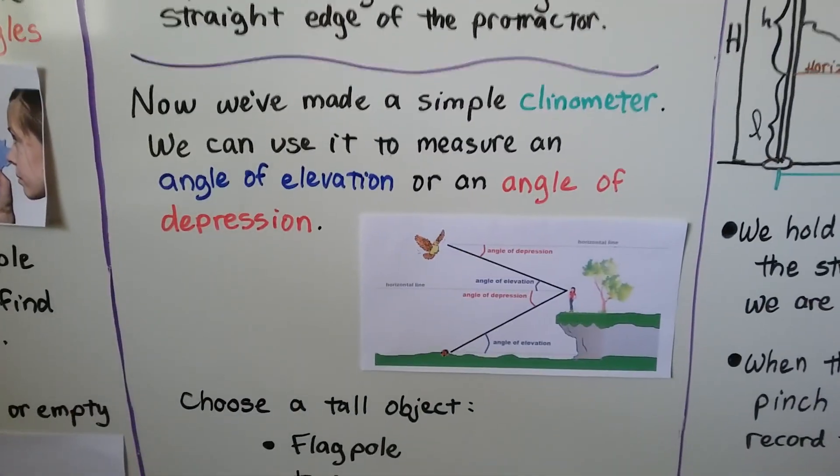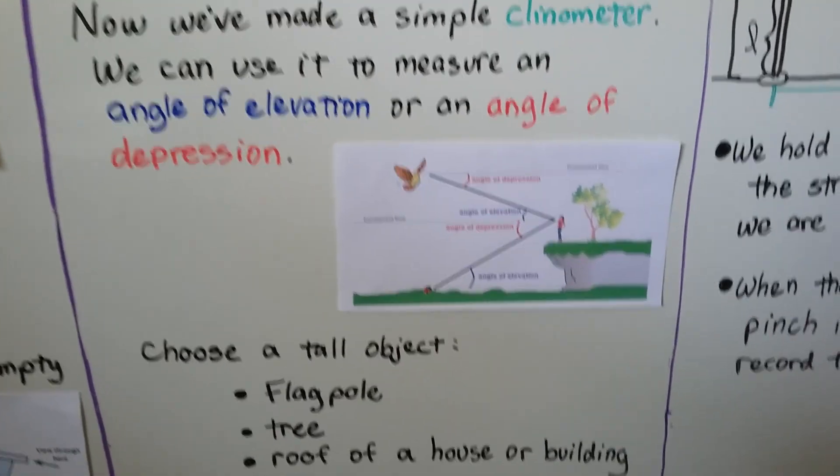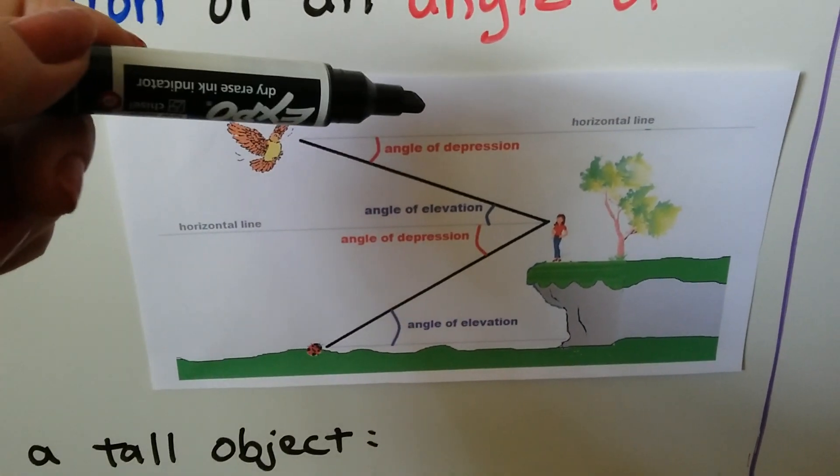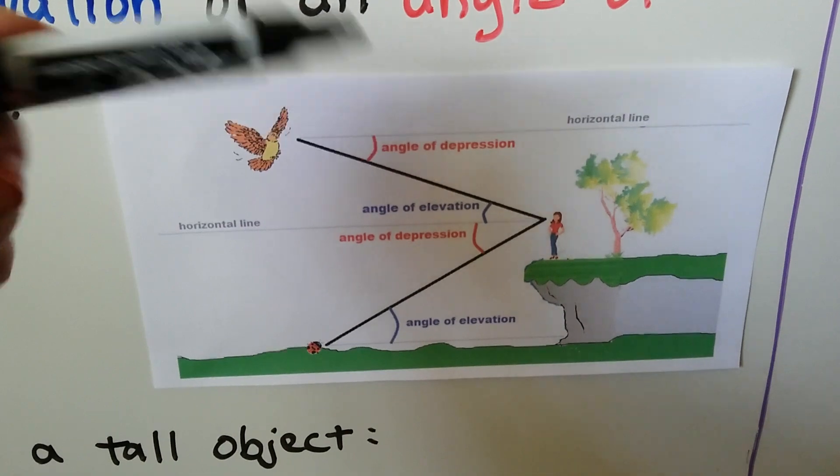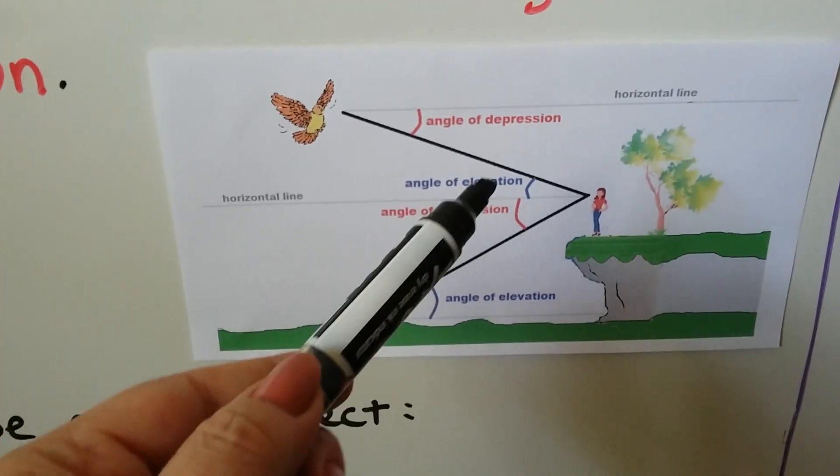Now we've made a simple clinometer and we can use it to measure an angle of elevation or an angle of depression. And we did this in the last video. For the bird to look at the woman from this horizontal line, that would be our angle of depression. And from the woman looking at the bird, we have this horizontal line, that's the angle of elevation.